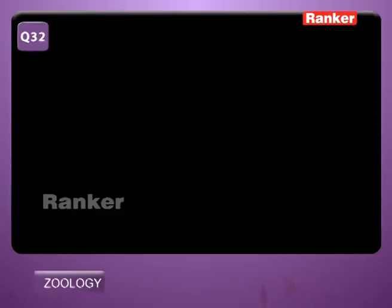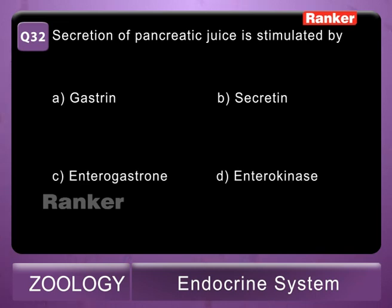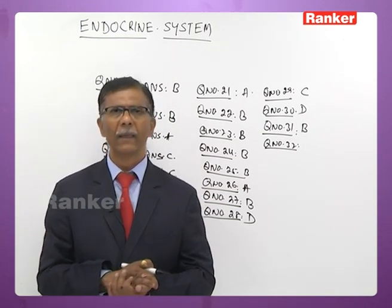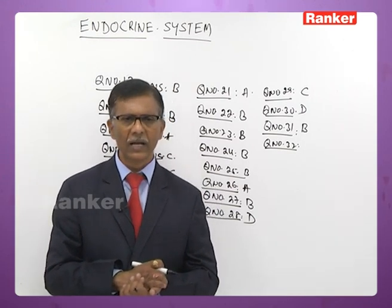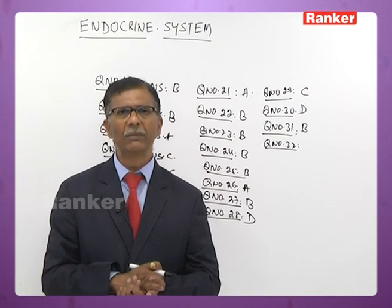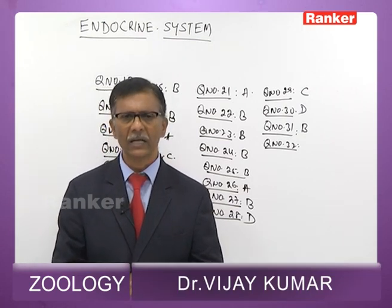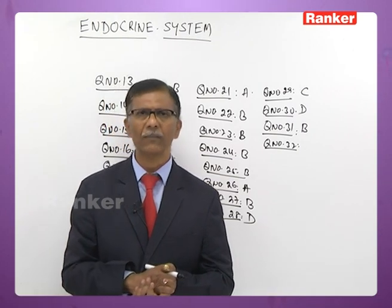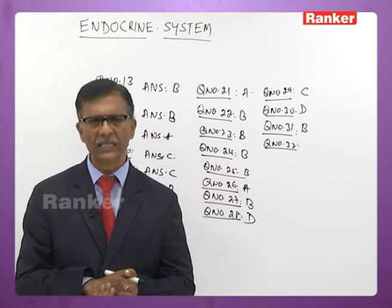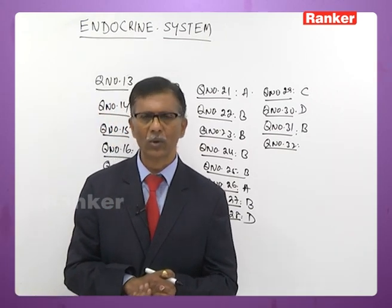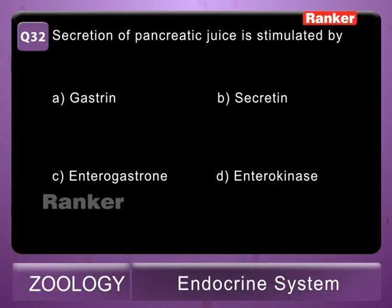Thirty-second question: secretion of pancreatic juice is stimulated by A - gastrin, B - secretin, C - enterogastrin, D - enterokinase. Gastrin is secreted by the gastric mucosa and ensures secretion of gastric juice. Secretin is secreted by the duodenal mucosa and stimulates the pancreas to release pancreatic juice. Enterogastrin checks excess secretion of gastric juice. Enterokinase (secreted by crypts of Lieberkühn) converts trypsinogen into trypsin. The correct answer is B — secretin.